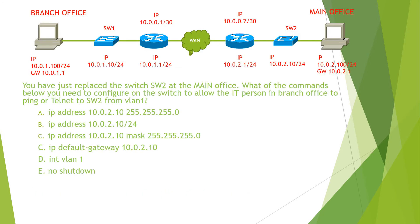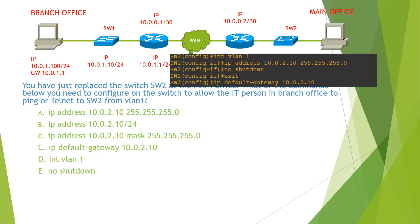The question reads: you have just replaced switch 2 in the main office. Which of the commands below do you need to configure on the switch to allow the IT person in the branch office to ping or telnet switch 2 from VLAN 1? In order to allow that, you need to go to interface VLAN 1, assign the IP address and subnet mask, then enable the interface.